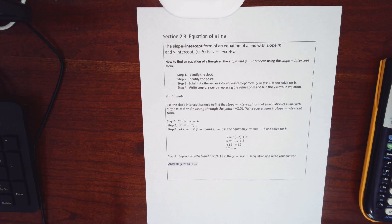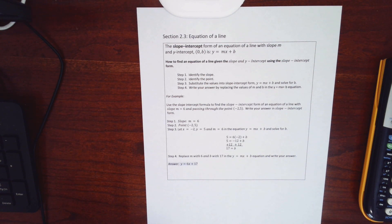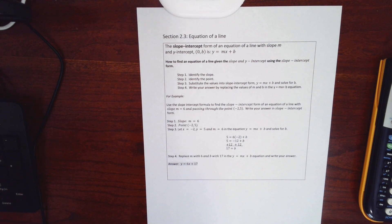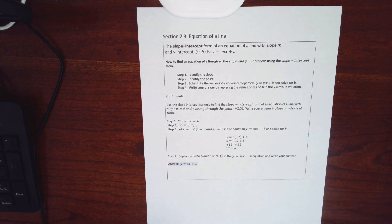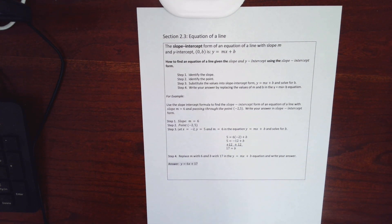In section 2.3 we're going to find equations of lines given different scenarios and different bits of information. We'll use that information to find an equation. Generically there are two strategies for finding the equation for any line. I'll teach the one that my nephew prefers — but that I don't prefer — first, and then we'll do the one I think is better. You can pick and choose.